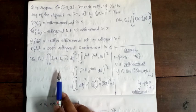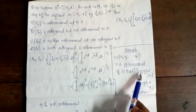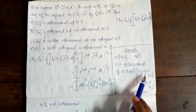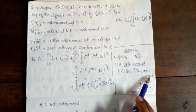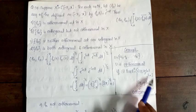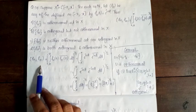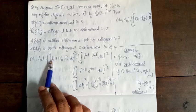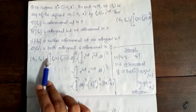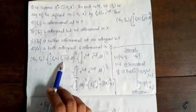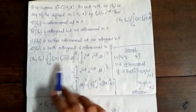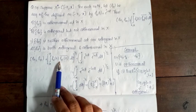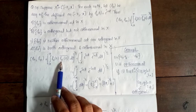First, I will check whether the sequence is orthonormal. For the first condition, ⟨fn, fn⟩ should equal 1. So ⟨fn, fn⟩ = integral from −π to π of fn(t) into conjugate of fn(t) dt. Since fn(t) = e^(int), this becomes integral from −π to π of e^(int) into conjugate of e^(int) dt.